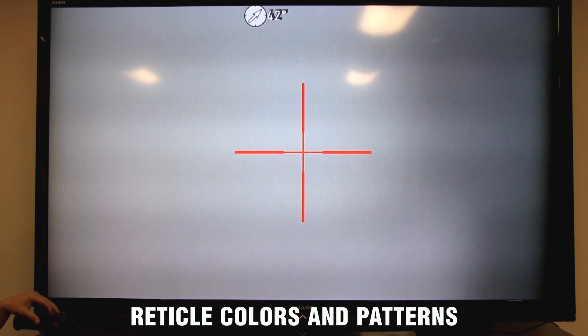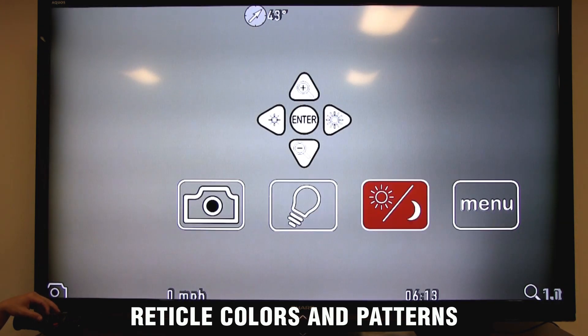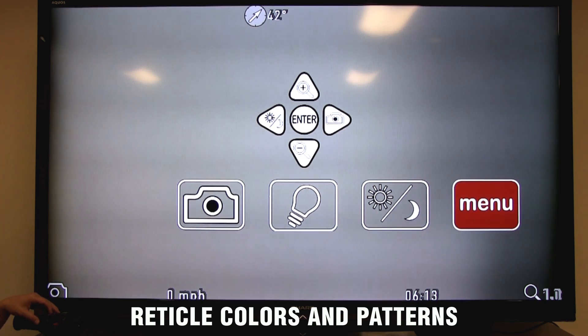Let's discuss reticle patterns and reticle color. These are all customizable in your menus. So again, let's press the enter button twice to bring up your user interface. Press the right arrow. Select your menu icon and press enter.